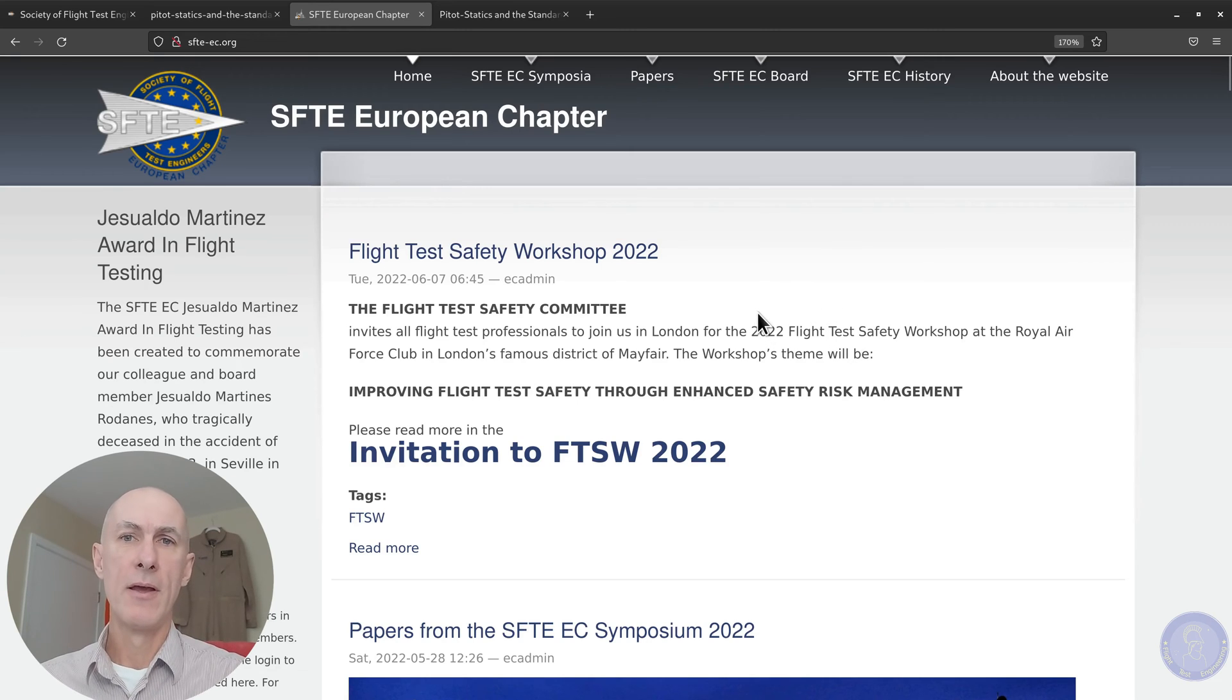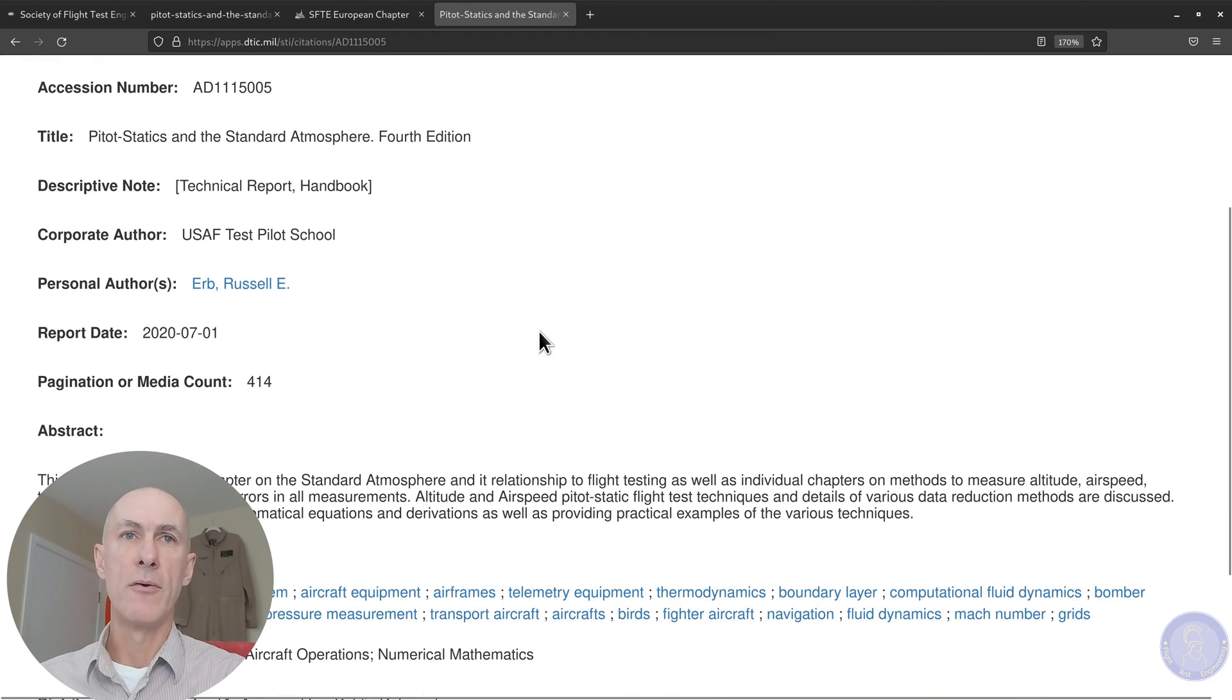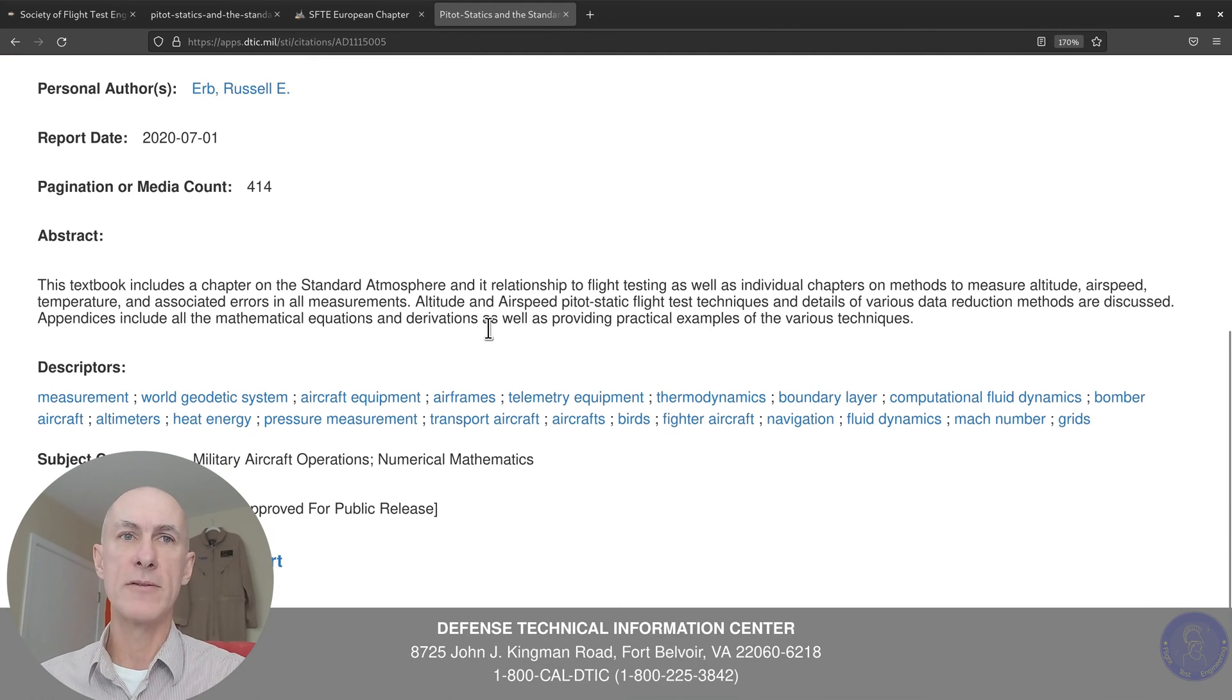Alternatively, you can also find the fourth edition of this reference at the Defense Technical Information Center. If you search for Erb, Russell Erb, you get to this page here, which has the download for the fourth edition.